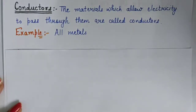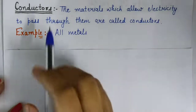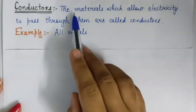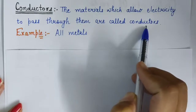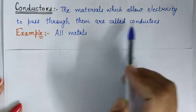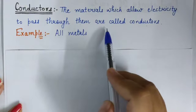Let us first learn about some important terms used to describe chemical effects of electric current. We have learnt in earlier classes that some materials allow electricity to pass through them while some do not. On the basis of this, materials are divided into two categories. First is conductor. The materials which allow electricity to pass through them are called conductors — if electric current can pass through the material, that material is called a conductor.